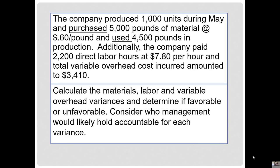The company produced 1,000 units during May and purchased 5,000 pounds of material at 60 cents per pound and used 4,500 pounds in production. Additionally, the company paid 2,200 direct labor hours at $7.80 per hour, and total variable overhead cost incurred amounted to $3,410. Calculate the materials, labor, and variable overhead variances, and determine if favorable or unfavorable. Consider who management would likely hold accountable for each variance.